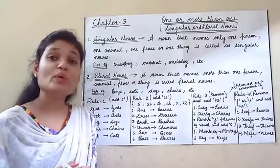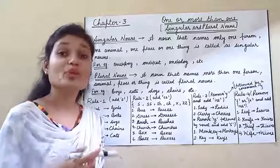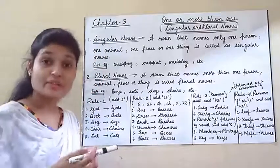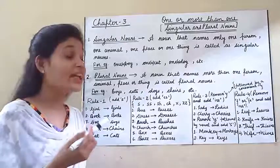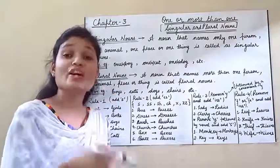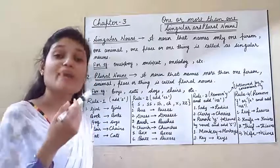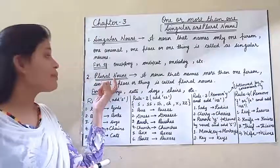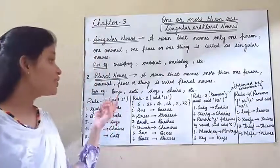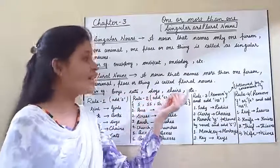Next is plural nouns. Plural nouns — when we talk about more than one person, animal, place, or thing, we call it a plural noun. For example: boys, cats, dogs, chairs, etc.